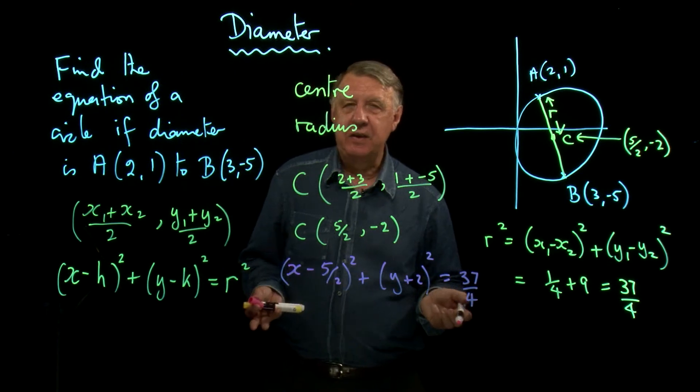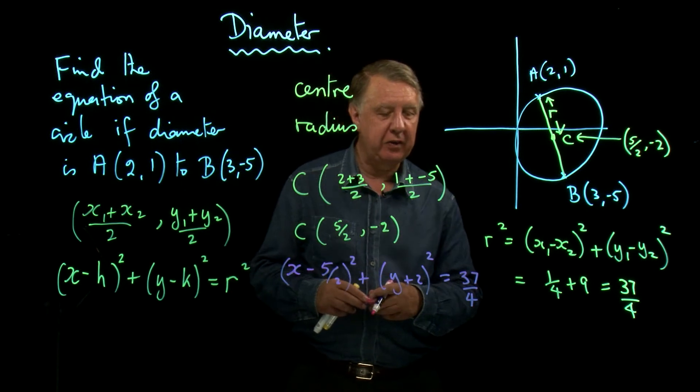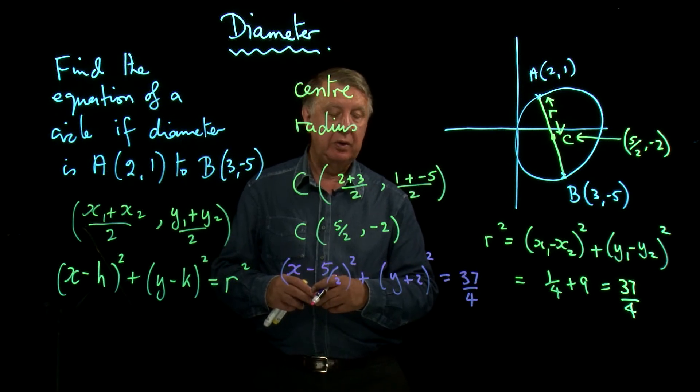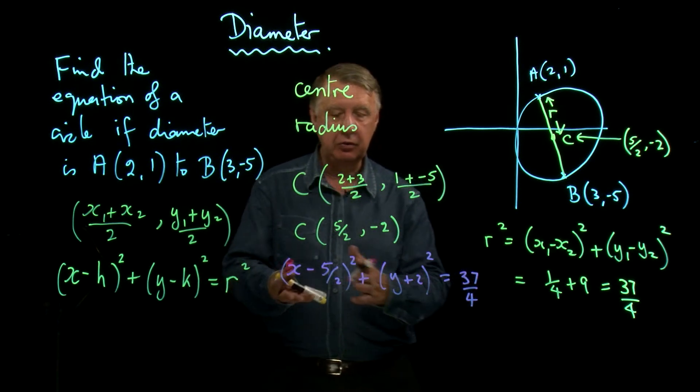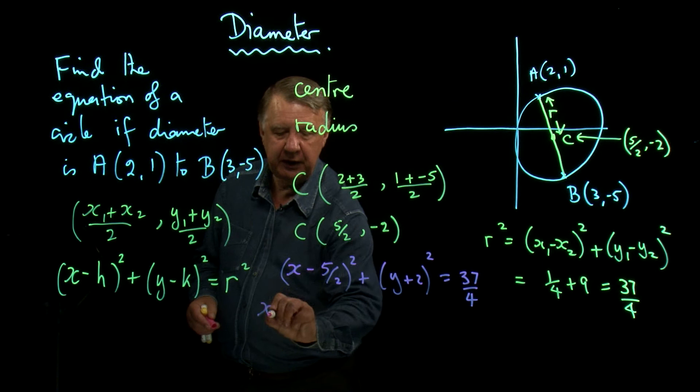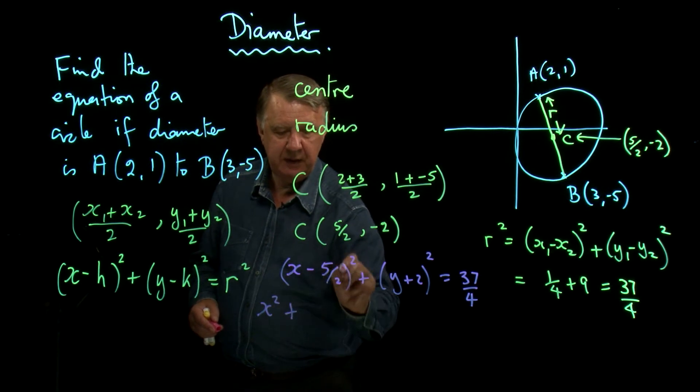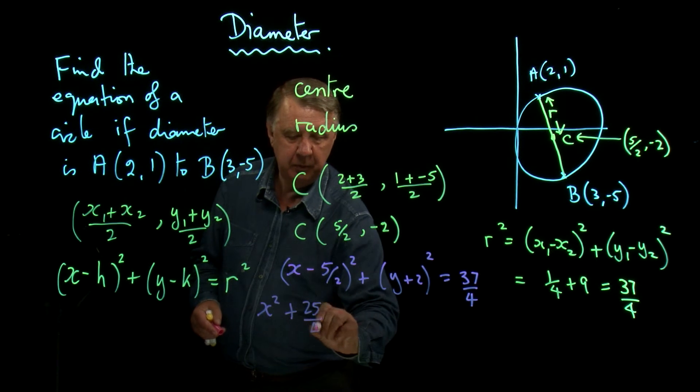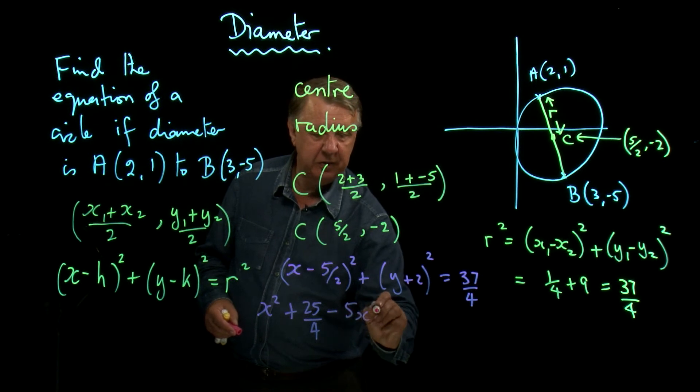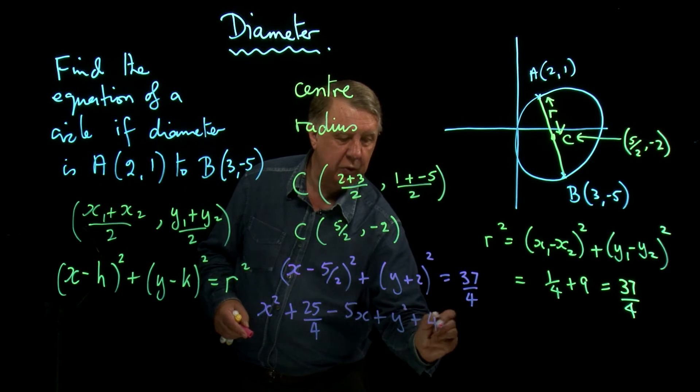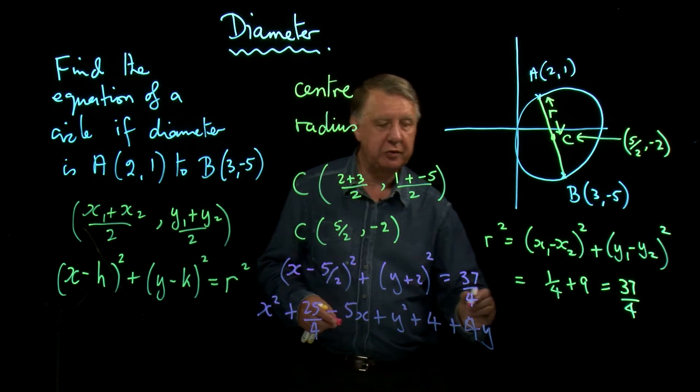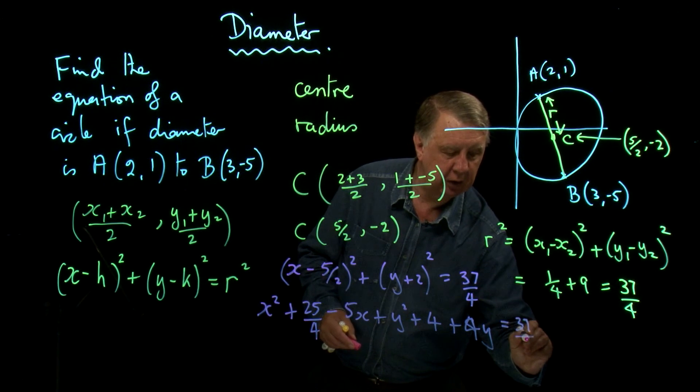Now, in a sense, that's the answer. It is highly unlikely that the examiner would accept that as the final answer and you would probably be asked to give it in the form of something. So let's expand that out and then get rid of the fractions. So x squared, plus square that is 25 over 4, twice the product will be minus 5x, plus y squared, square that is 4, twice the product is 4y equals 37 over 4.